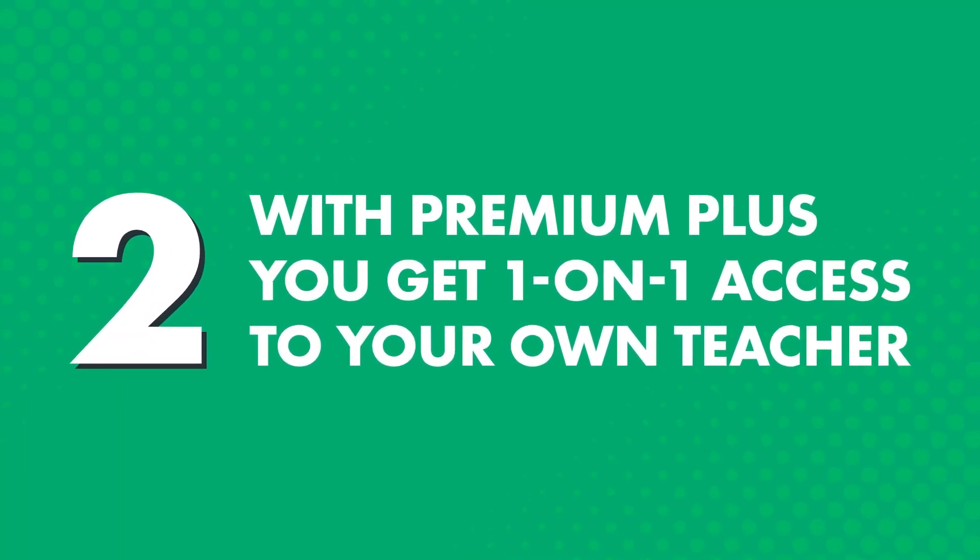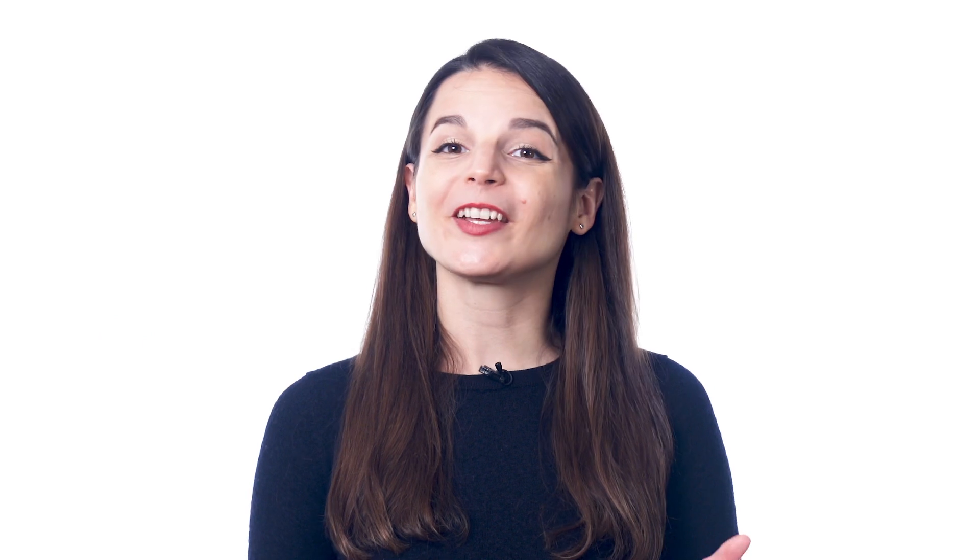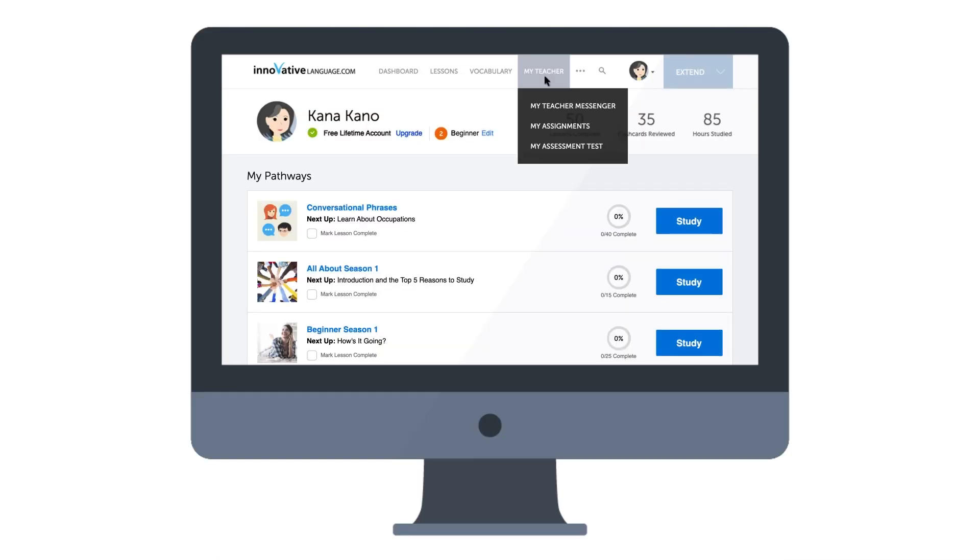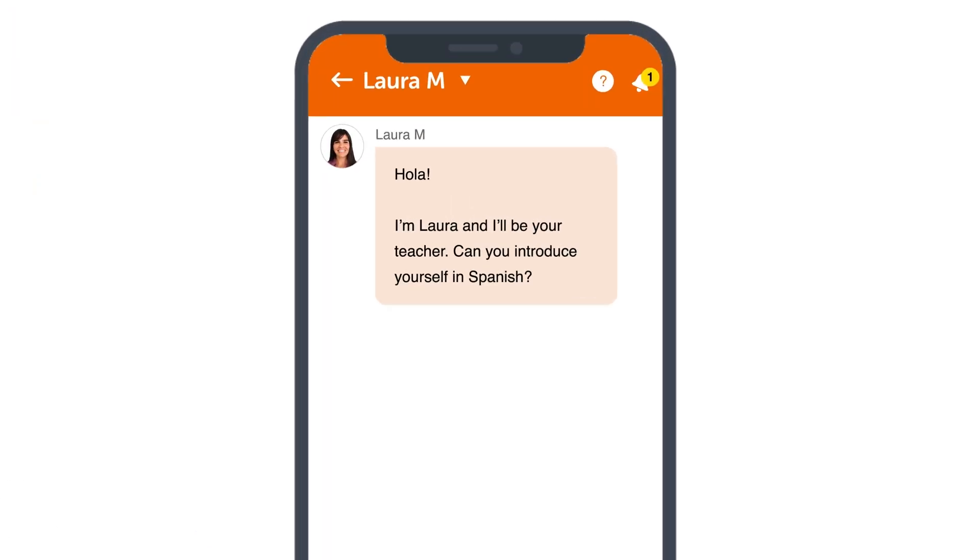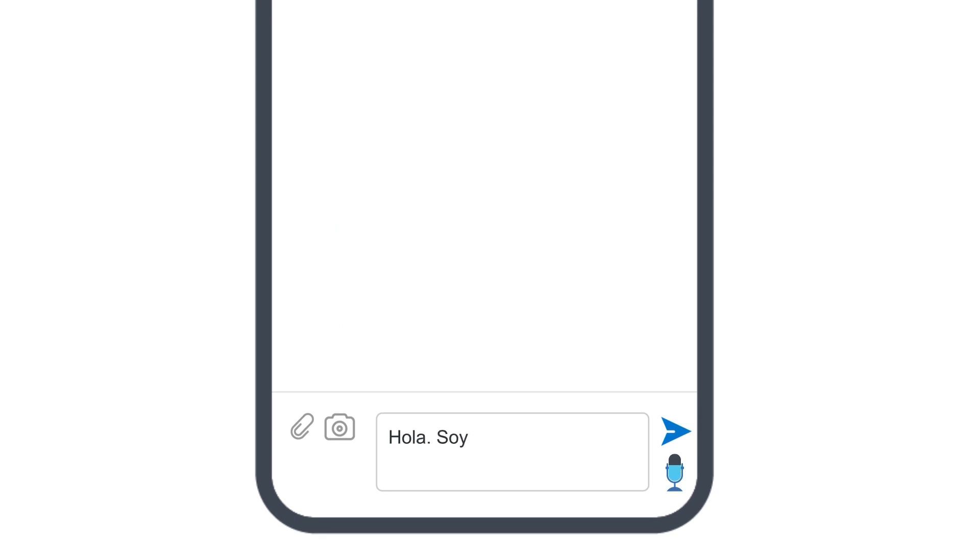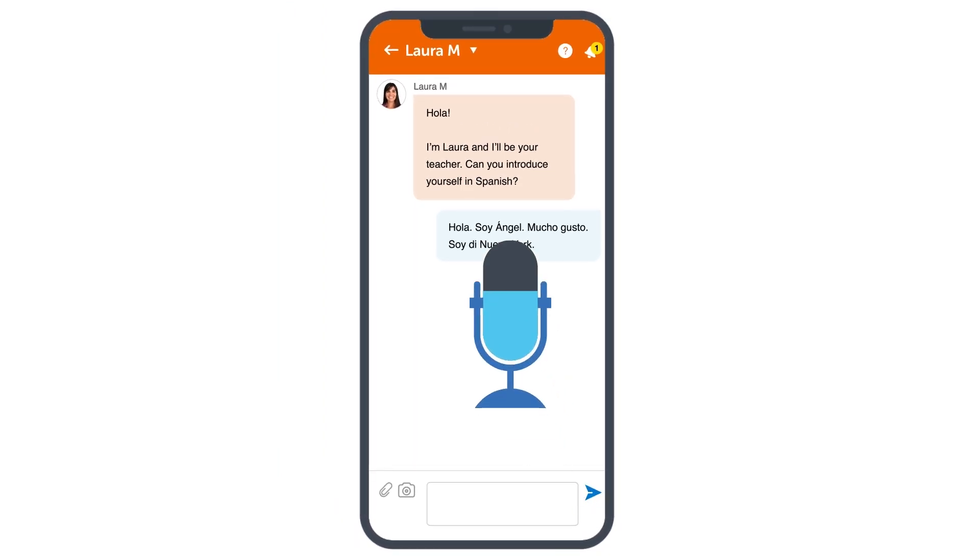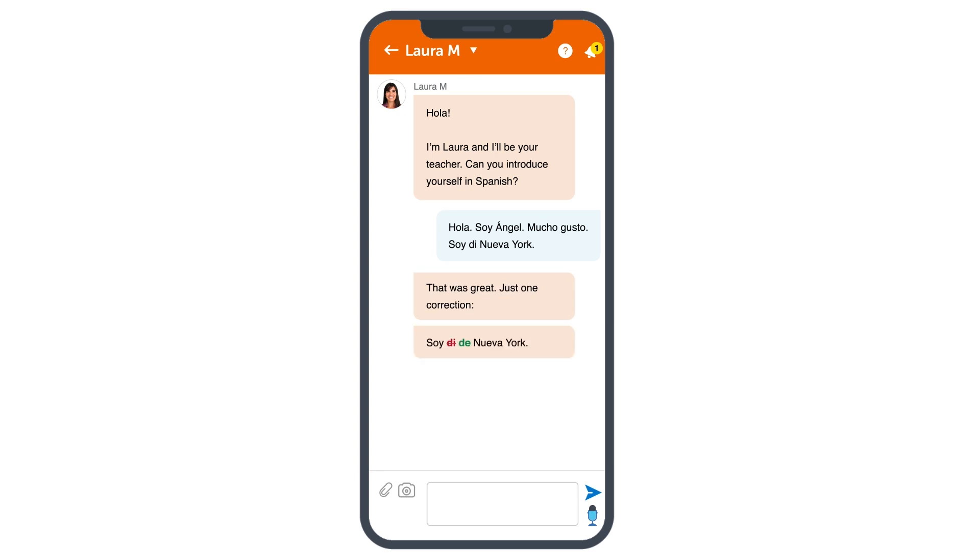Two, with Premium Plus, you get one-on-one access to your own teacher, whom you can learn from at your own pace, anywhere, anytime, without being bound to the teacher's schedule. So, when you log in, look for the My Teacher Messenger on the site, or access it inside the app. With the My Teacher Messenger, you can interact as much as you want with your teacher, and ask language questions, practice writing, and get corrections and feedback. You can even practice your speaking skills. Send recordings of yourself speaking to your teacher for feedback. In fact, one of the first things you'll have to do is write or record a self-introduction. Your teacher will send you corrections and advice on your pronunciation, so that you can introduce yourself perfectly.